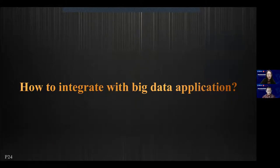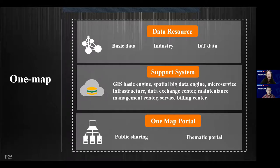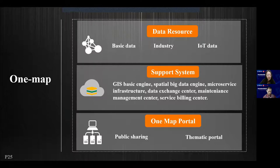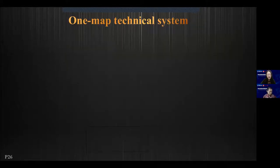For big data applications, how does the OneMap platform integrate with big data? The construction system of OneMap includes: first, setting up a distributed spatial data engine that integrates multiple sources of data to achieve high-efficiency data management and a reliable data foundation. Based on a GIS microservice framework and distributed big data engine with data exchange, OneMap could provide authoritative professional mapping services, visualization, and spatial analysis functionality. Through the portal system, it could achieve public sharing and a semantic map portal.